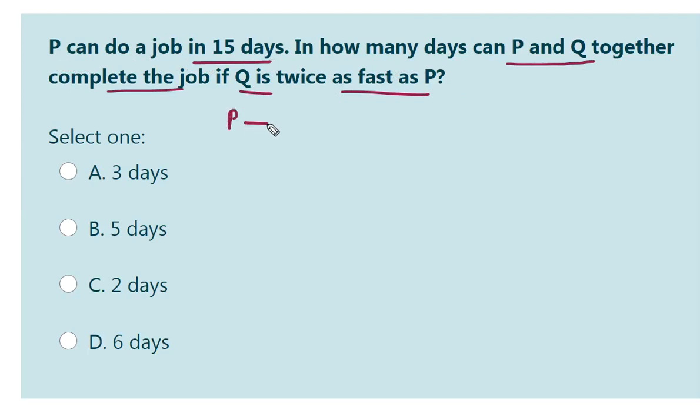P can do the job in 15 days. And the statement states that Q is twice as fast as P. So, Q can complete the same work in 7.5 days - 15 by 2, 7.5 days.